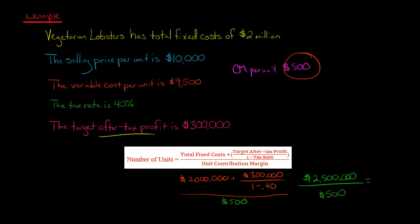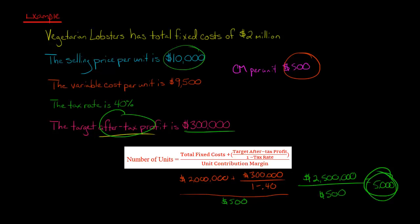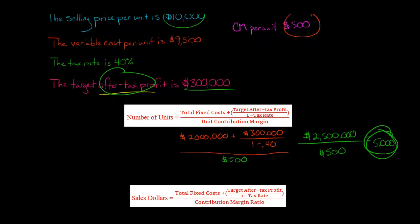So we have $2 million plus $500,000, which is $2.5 million, divided by $500. That equals 5,000. We need to sell 5,000 of these lobsters — 5,000 units — for the company to achieve an after-tax profit of $300,000. An easy way to get the sales revenue is just to take 5,000 multiplied by $10,000, but I'll also show you how to apply the formula.